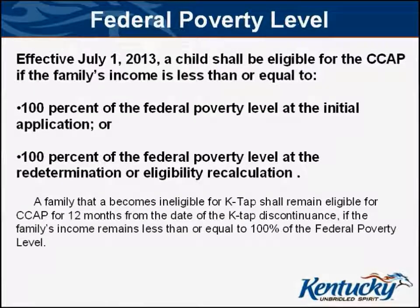Federal Poverty Level: Effective July 1, 2013, a child shall be eligible for the Child Care Assistance Program if the family's income is less than or equal to 100% of the federal poverty level at the initial application, or 100% of the federal poverty level at the redetermination or eligibility recalculation. A family that has become ineligible for KTAP shall remain eligible for CCAP for 12 months from the date of the KTAP discontinuance if the family's income remains less than or equal to 100% of the federal poverty level.